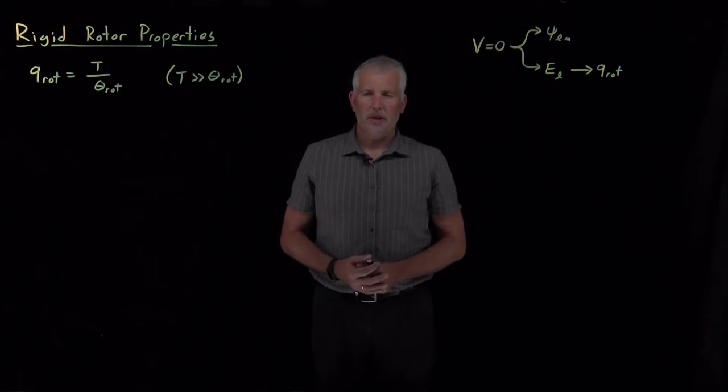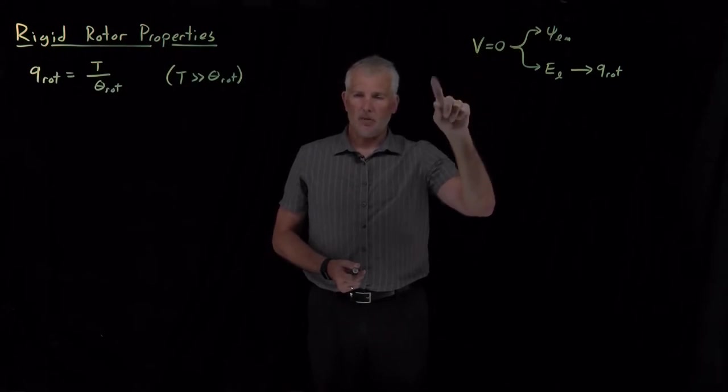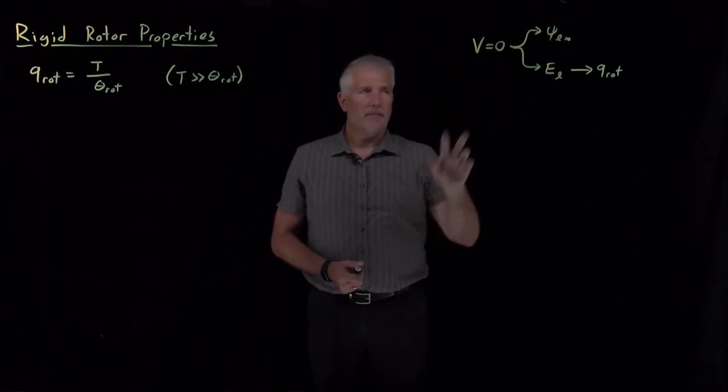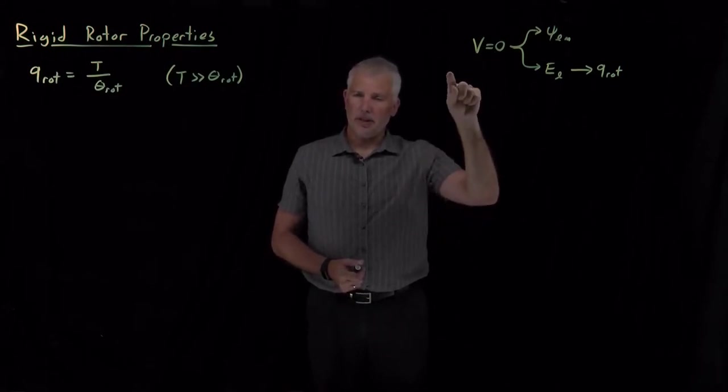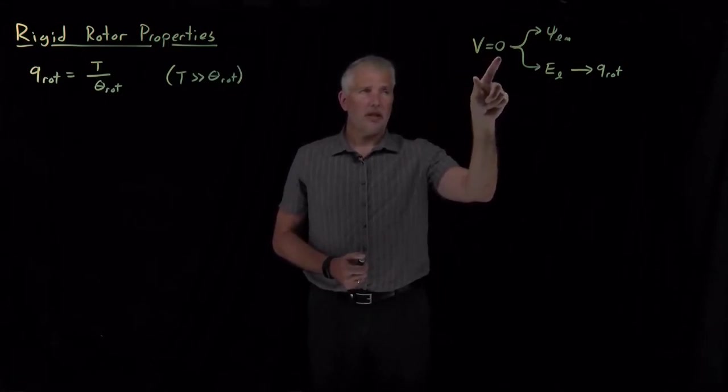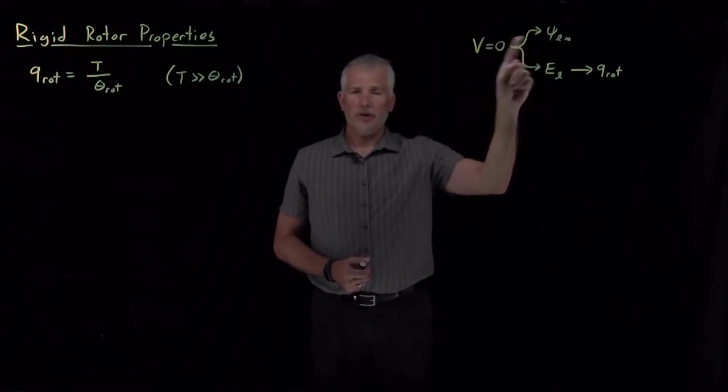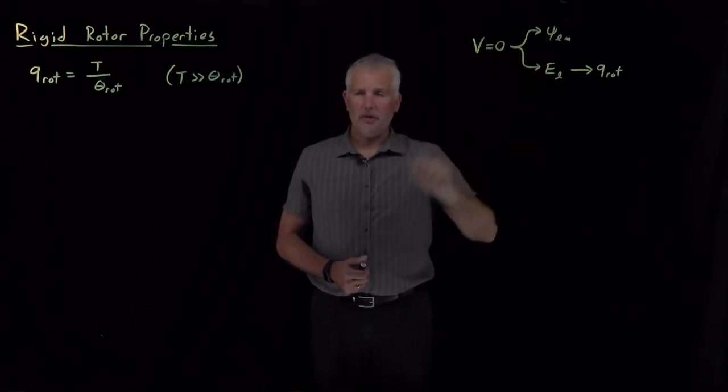If we take a step back and remind ourselves what we've done for the rigid rotor so far, we started out by saying our rotating rigid object has no potential energy. We don't expect its potential energy to change as it rotates. That was enough, plus use of spherical polar coordinates, to derive some wave functions for the rigid rotor and the energy levels for the rigid rotor.